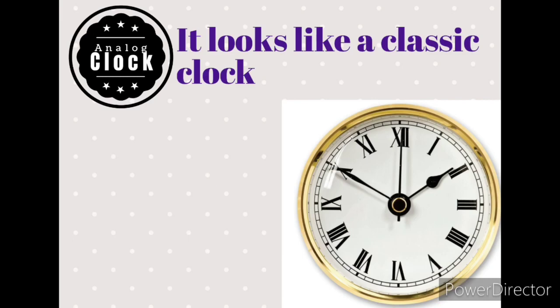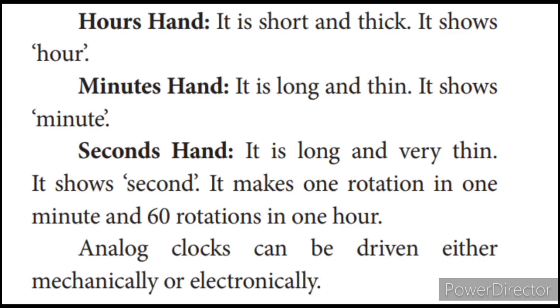Analog clock: It looks like a classic clock. It has three hands to show the time. Hour hand: it is short and thick, it shows hours. Minute hand: it is long and thin, it shows minutes. Second hand: it is long and very thin, it shows seconds. It makes one rotation in one minute and 60 rotations in one hour.